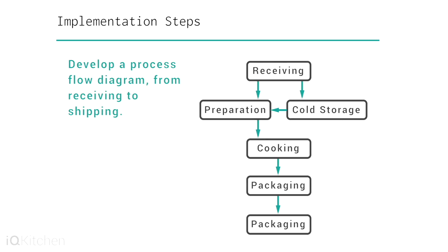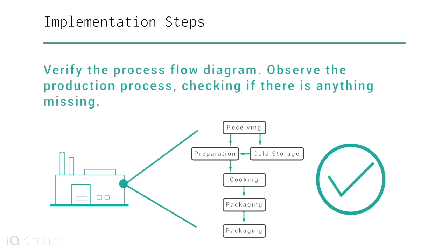Task four: develop a process flow diagram. The HACCP team will draw a flow diagram that shows all the steps in the production process from receiving through shipping. Task five: verify the process flow diagram. The HACCP team can do this by having an impartial person do a walkthrough of the entire production process, checking to see if there is anything missing from the diagram.